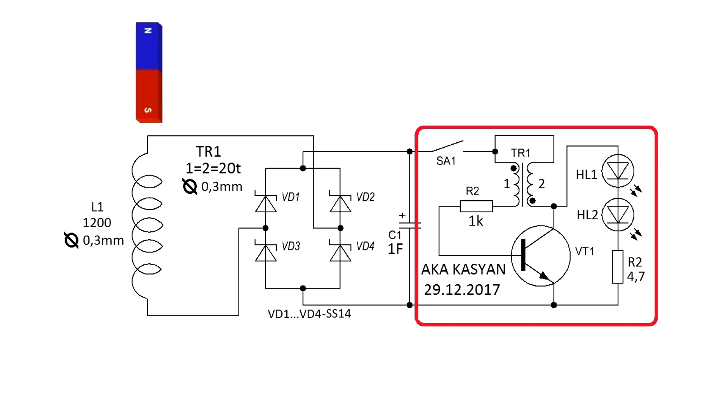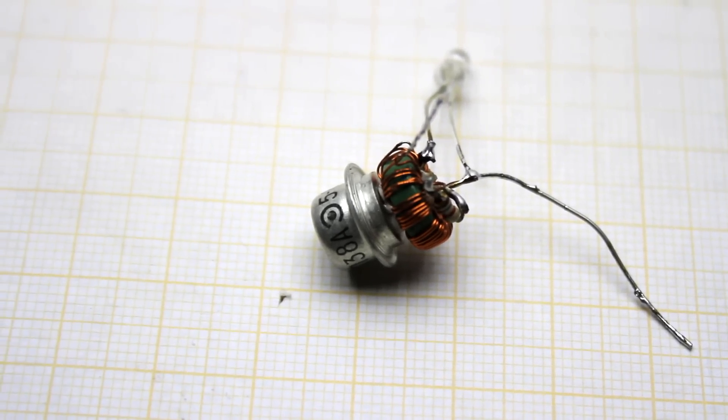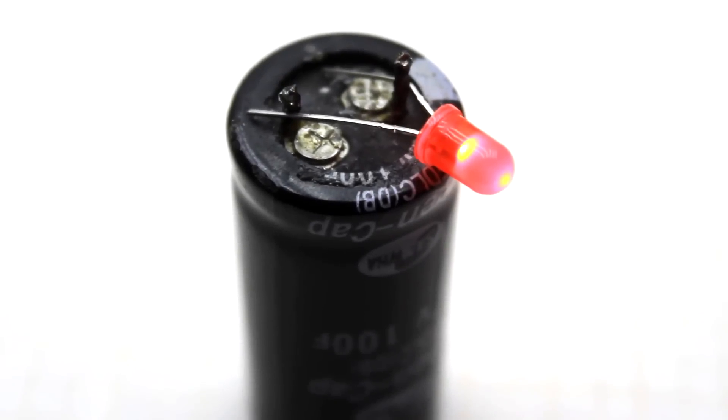In the project, I decided to use a boost converter. As we know, to power the LEDs, we need a voltage above 2 volts. Depending on the type and color of the LED, this voltage will be different.